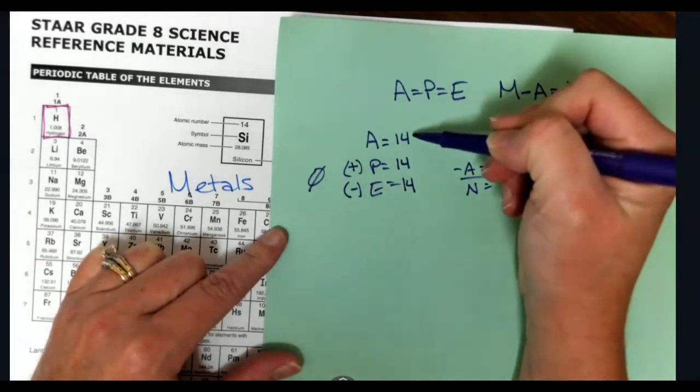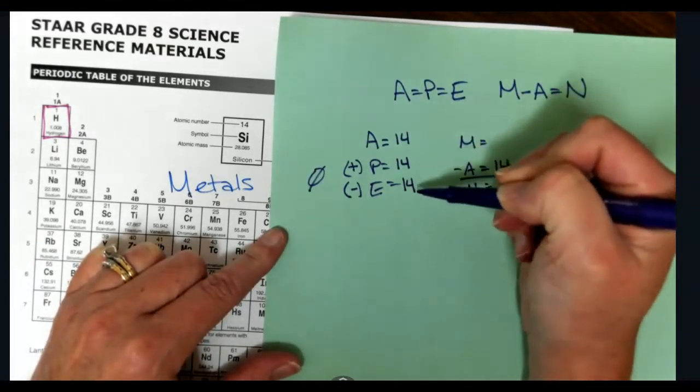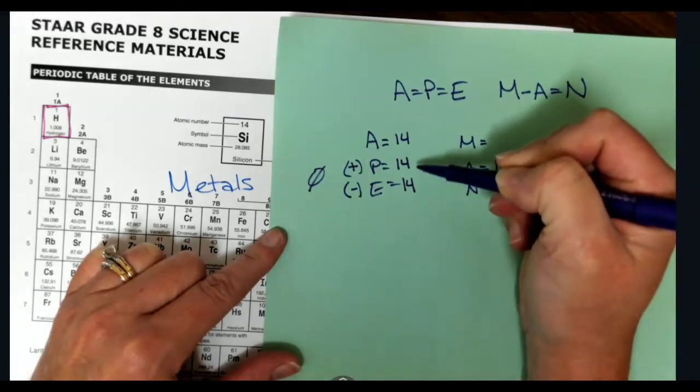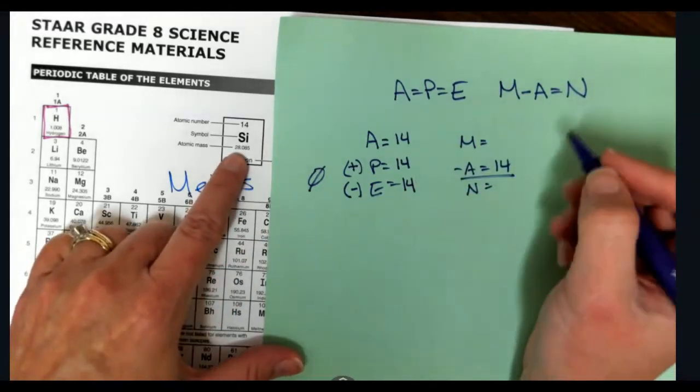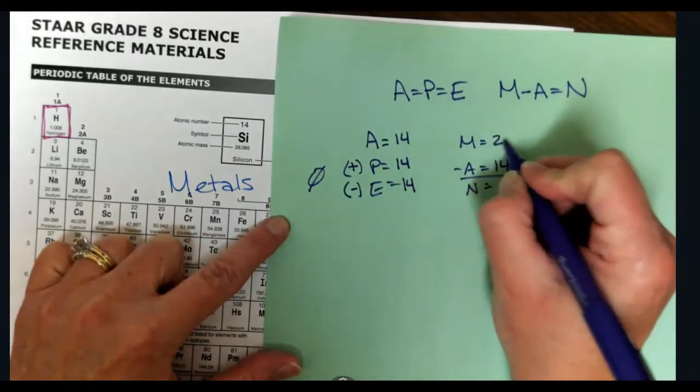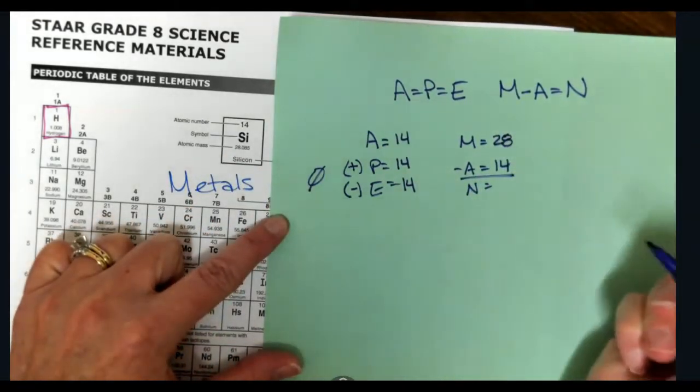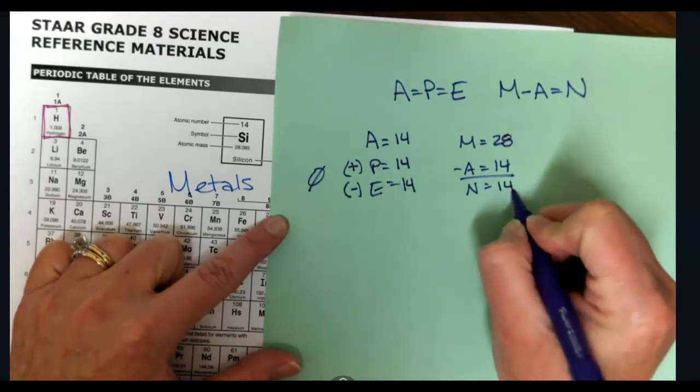So the atomic number is the number of protons. And the protons are equal to the number of electrons because I want no charge. Now my mass, 28.0, stays 28. Subtract 14, and I get 14 neutrons.